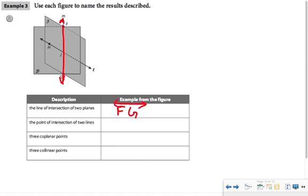There are two lines in this diagram, line M and line L, and they are intersecting. I've already drawn line FG for you. If I draw line L, you should see that they are intersecting at point J.